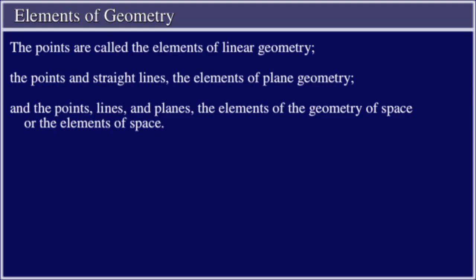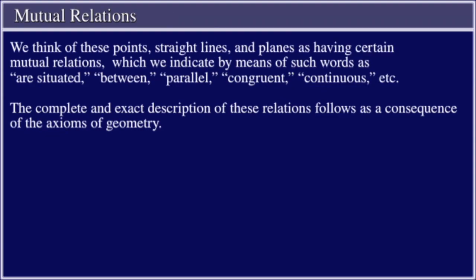The points are called the elements of linear geometry; the points and straight lines the elements of plane geometry; and the points, lines, and planes the elements of the geometry of space, or the elements of space. We think of these points, straight lines, and planes as having certain mutual relations, which we indicate by means of such words as: are situated between, parallel, congruent, continuous, etc.